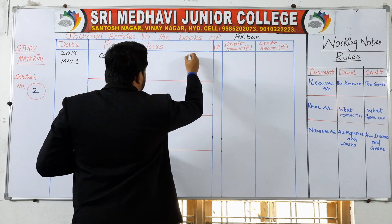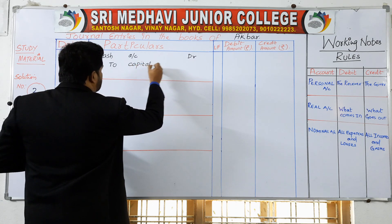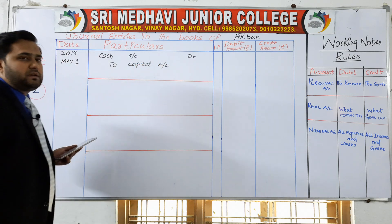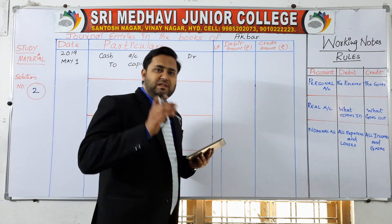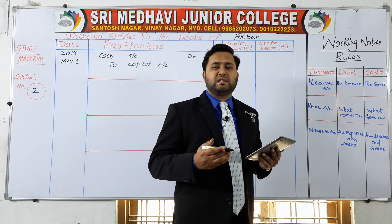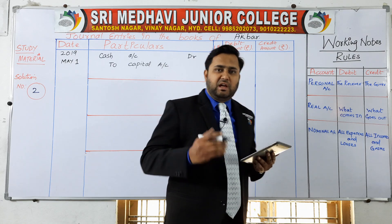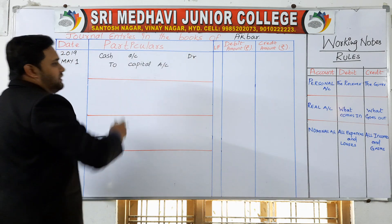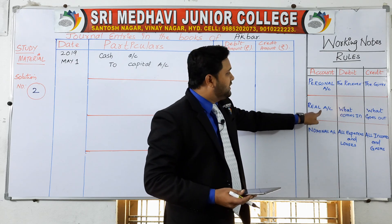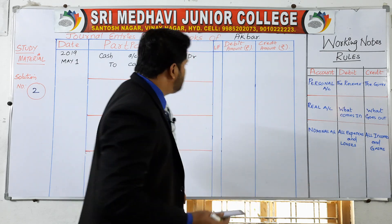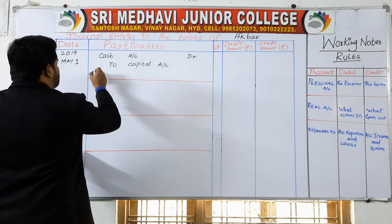Cash account debit to capital account. Why? Because business is started and cash came into the business. Cash is a real account — debit what comes in. Cash comes into the business, so cash account is debited. Capital account is credited. So cash account debit to capital account is the first journal entry.